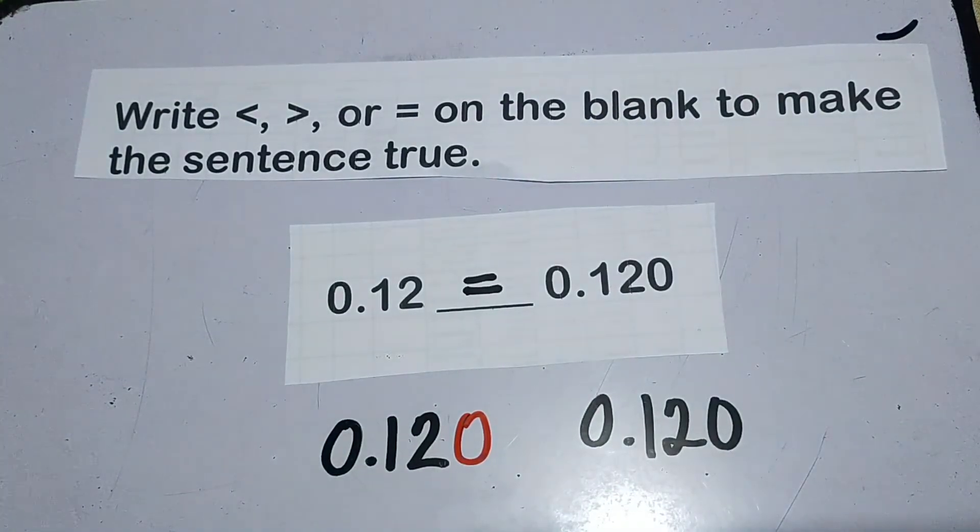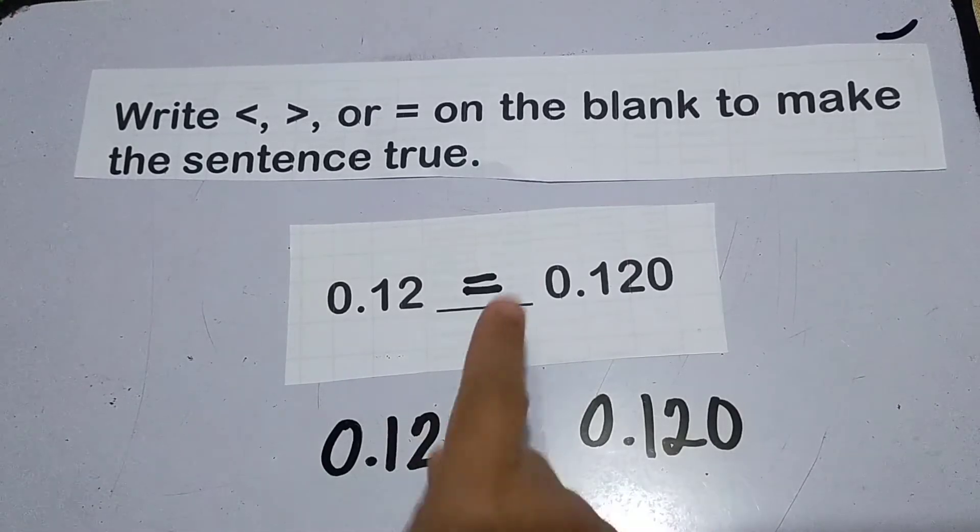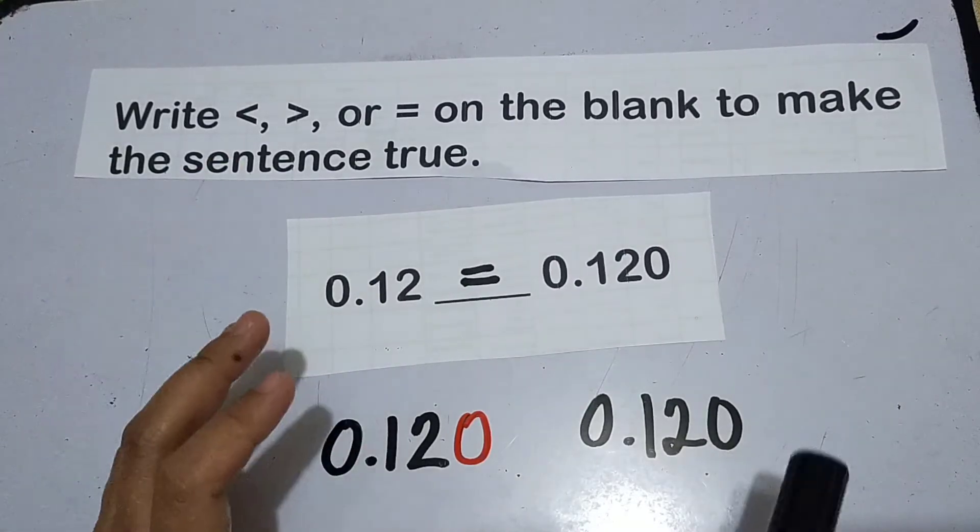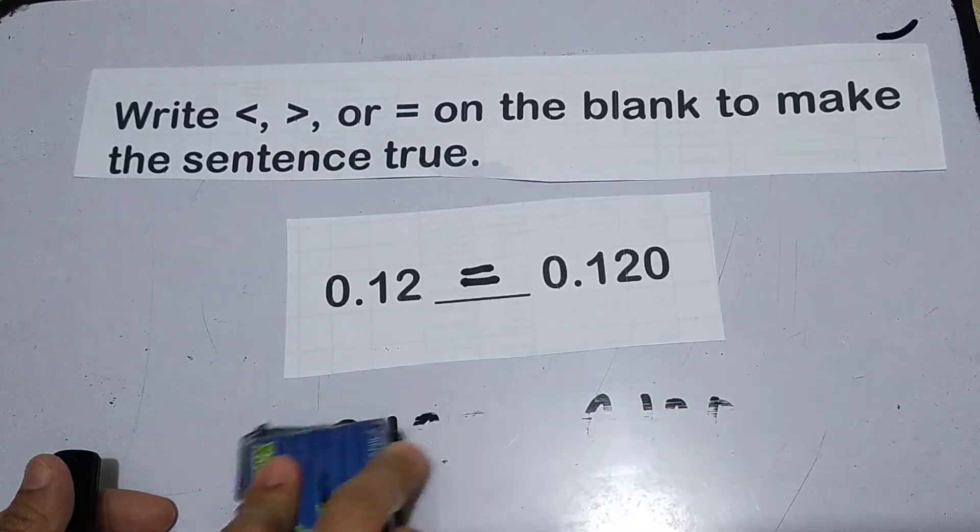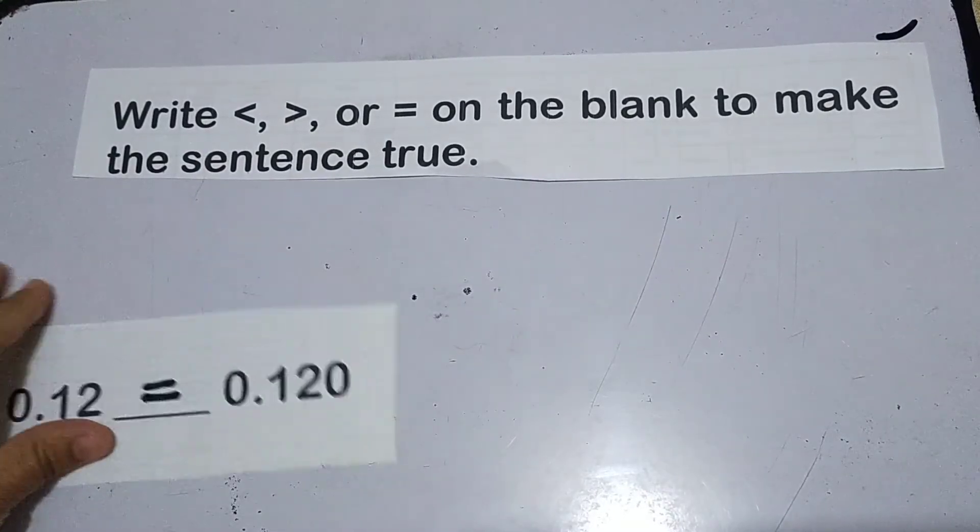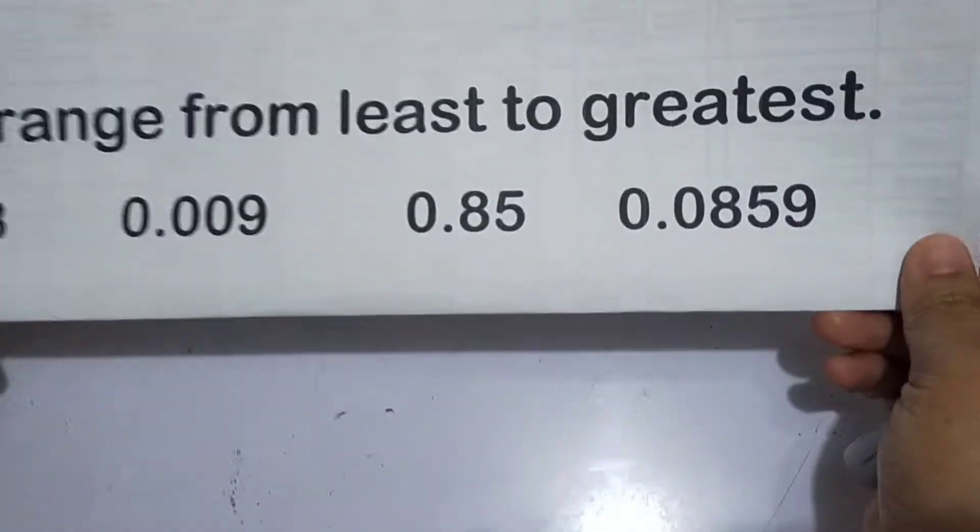So kung baga, itong imaginary zero, kapag tapos ka, tanggalin mo na yan. Ito pa rin given yung considering natin, yun pa rin. Ito, pag nag-scratch ka lang. So yun yung technique kung paano mo i-compare yung decimal numbers. Basta kapag hindi equal yung kanyang bilang ng digits, mag-add lang kayo ng zero to make it equal. Now, let's move on to the second topic, yung arranging decimal numbers.